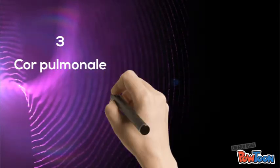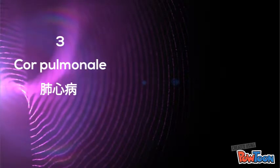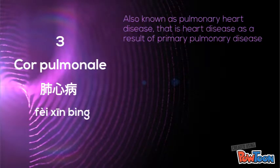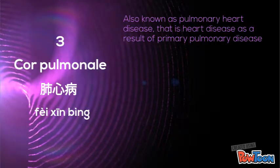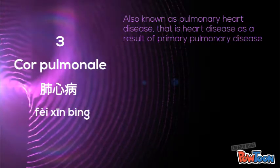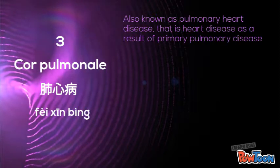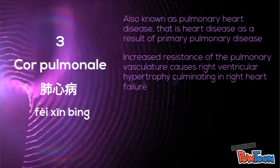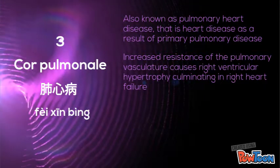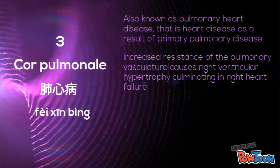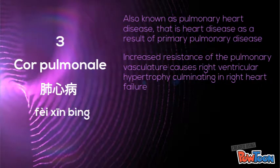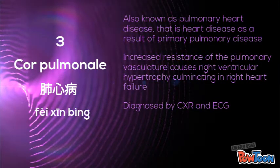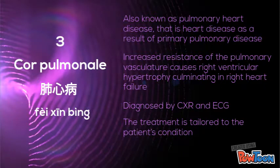Cor Pulmonale — Fei xin bing, also known as pulmonary heart disease, is heart disease as a result of primary pulmonary disease. Multiple factors leading to increased resistance of the pulmonary vasculature cause right ventricular hypertrophy, culminating in right heart failure. Cor Pulmonale is diagnosed by CXR and ECG, and treatment is tailored according to the cause.